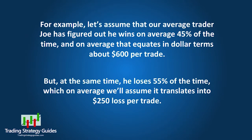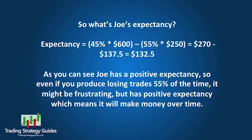For example, let's assume that our average trader Joe wins 45% of the time, and on average that equates to about $600 per trade. But at the same time, he loses 55% of the time, which on average translates into a $250 loss per trade. So what's Joe's expectancy? Expectancy equals 45% times $600 minus 55% times $250, which equals $270 minus $137.50, equals $132.50. As you can see, Joe has a positive expectancy. So even if you produce losing trades 55% of the time, it might be frustrating, but positive expectancy means it will make money over time.